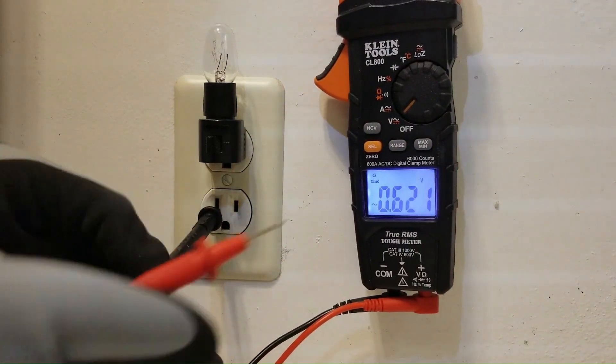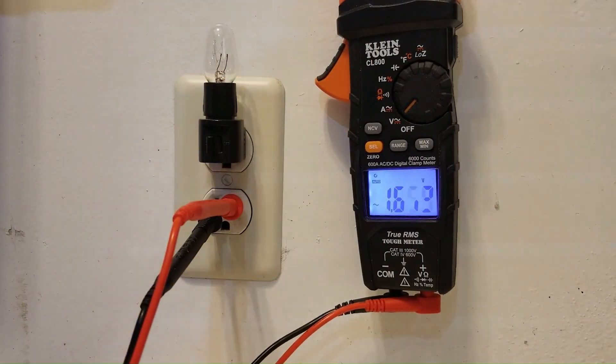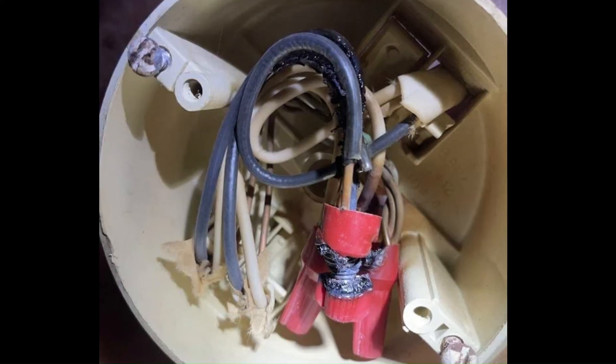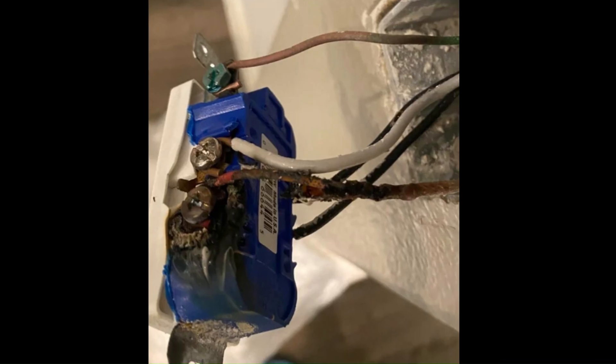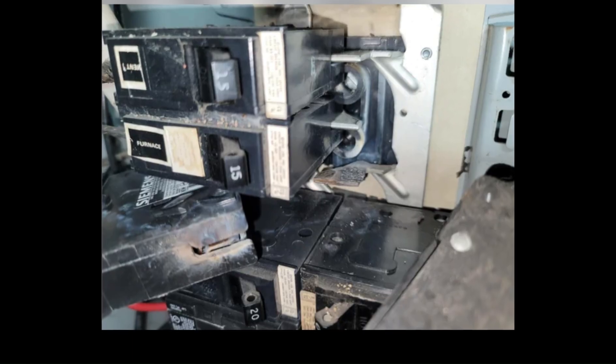A loose or high resistance condition on the hot line can result from a poorly connected junction in the junction box, a loose connection at the outlet, or even an issue in the breaker box.